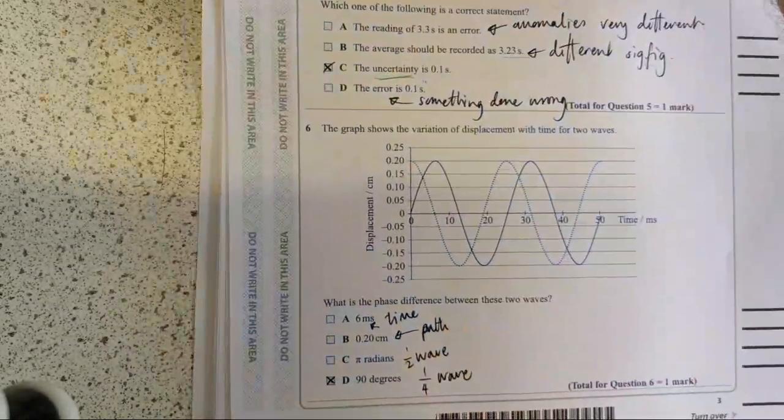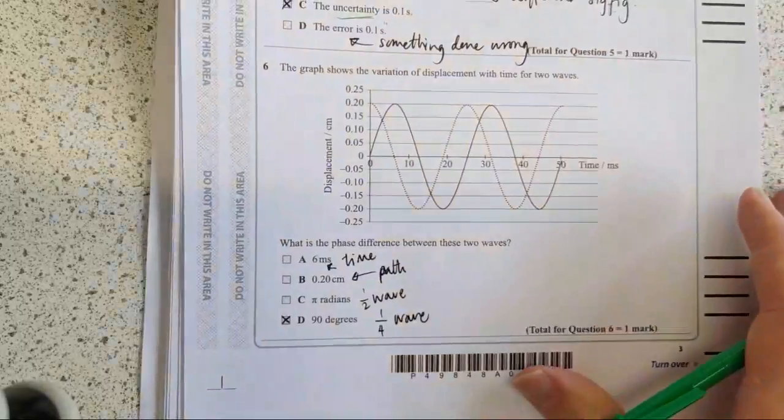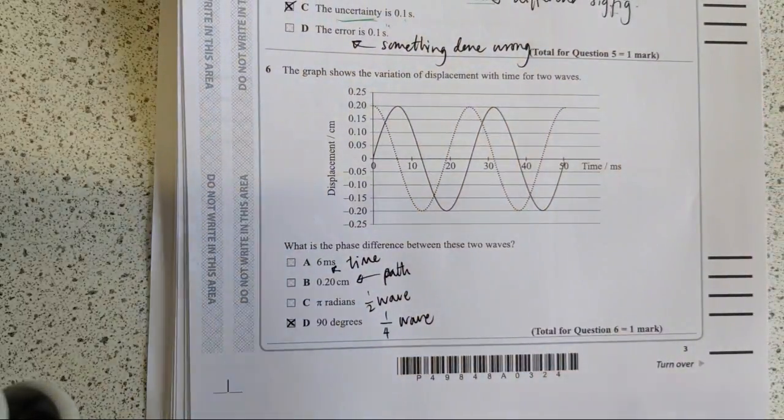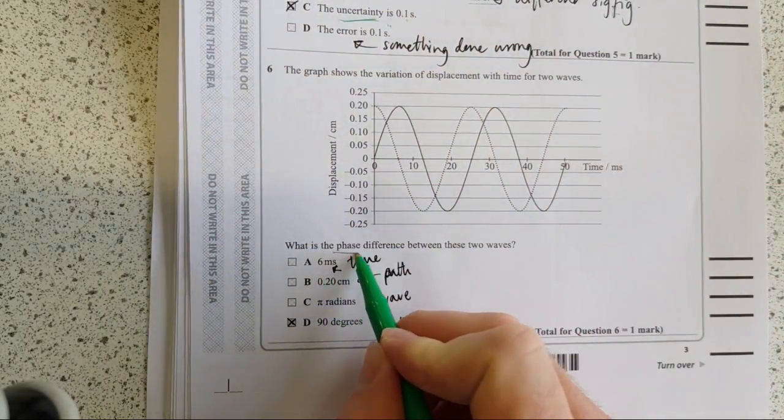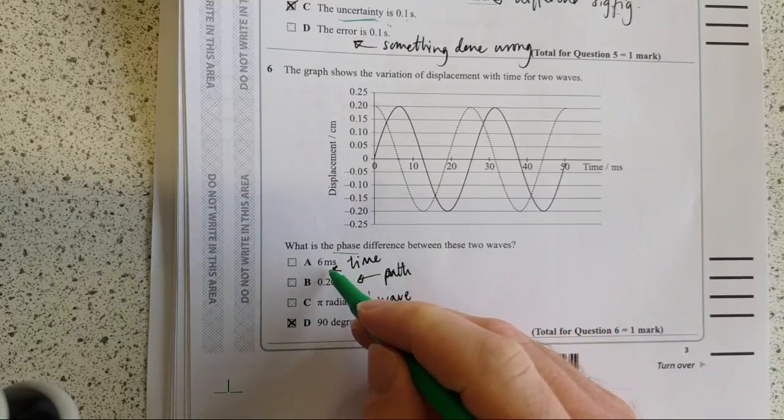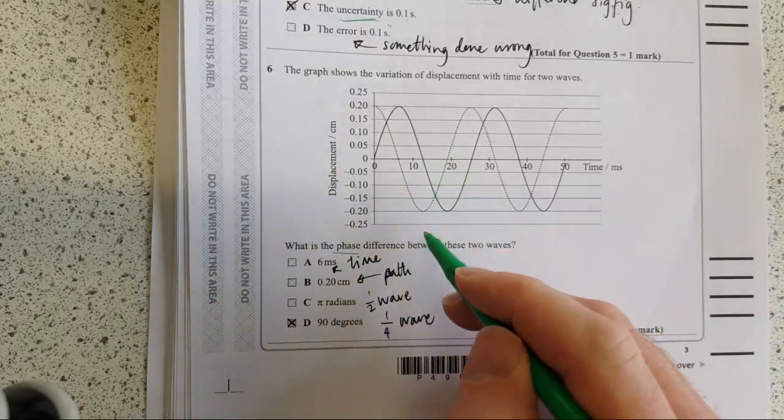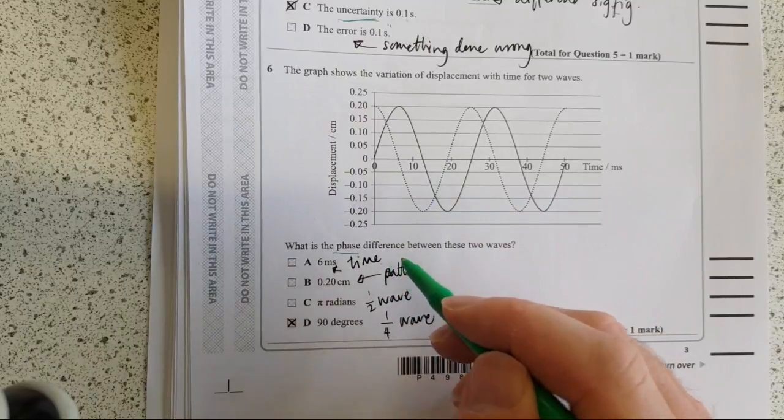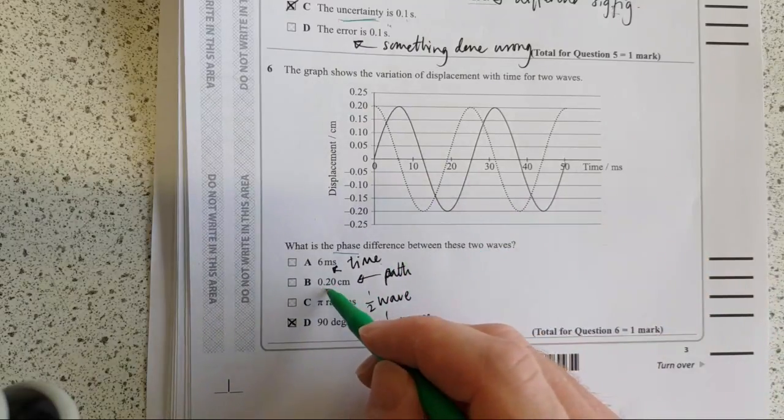The graph shows a variation of displacement with time for two waves. So which is the phase difference between the two waves? Now, this is not a phase difference, this is a time difference. It might well be correct, it might be the time difference, but it's not a phase difference. This is a path difference, it's a length.